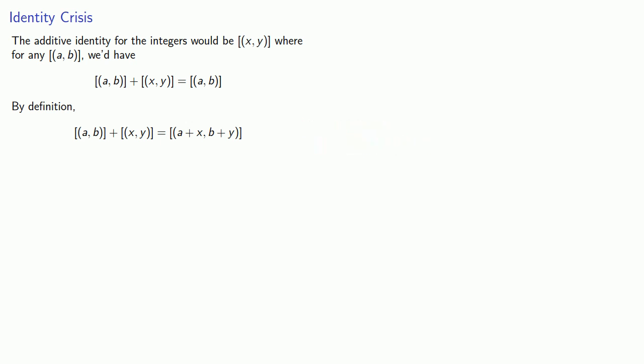And if x, y is the additive inverse, we'd need the two equivalence classes to be the same. And again, remember, if two equivalence classes overlap, they have to be identical. And so, the way we can guarantee the two equivalence classes are the same is if the class representative a, b is equivalent to the class representative a plus x, b plus y.